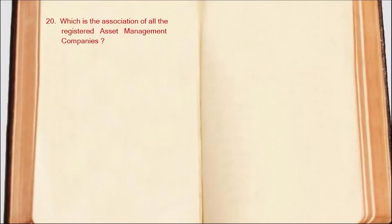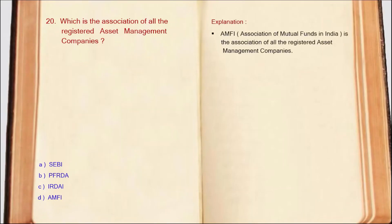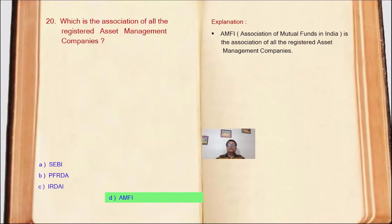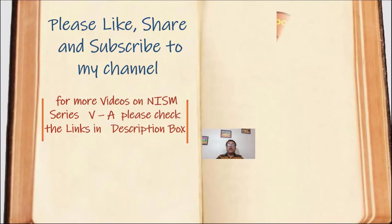Next question: Which is the association of all the registered asset management companies? AMFI — Association of Mutual Funds in India — is the association of all registered AMCs. So the correct answer is Option D: AMFI. This completes the 20 MCQs from Chapter 3. Hope it gives you an idea of the question pattern and helps you get a better understanding. Thank you for watching the video.